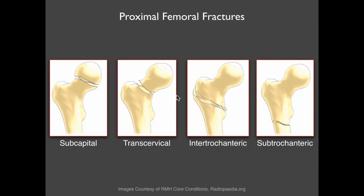Femoral fractures are described by location: subcapital just below the head, basicervical, or transcervical across the neck. They can also be intertrochanteric or subtrochanteric. The latter two are outside the hip capsule and the first two are inside the hip capsule. You can also have isolated fractures involving the greater trochanter or lesser trochanter.